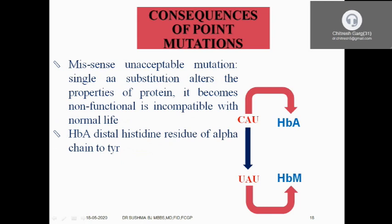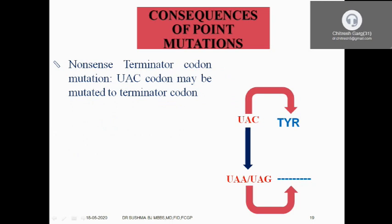Missense but highly unacceptable mutation: in the alpha chain of adult hemoglobin, the distal histidine is coded by CAU. This is replaced by UAU, which codes for tyrosine, resulting in an abnormal hemoglobin called methemoglobin. The formation of HbM is not compatible with life — the patient will have severe cyanosis due to compromised oxygenation. Terminator codon mutation: the codon is replaced by nonsense codons like UAA, UAG, and the chain gets terminated.